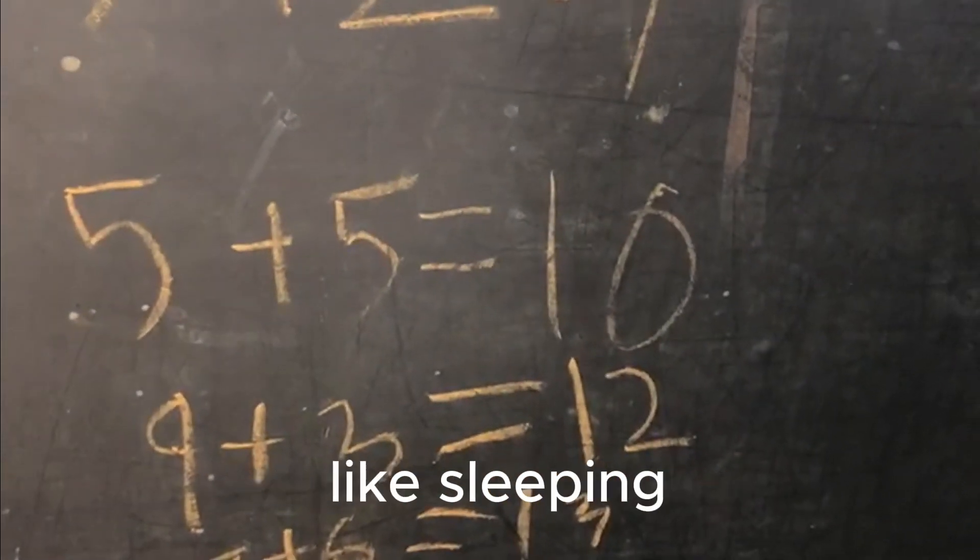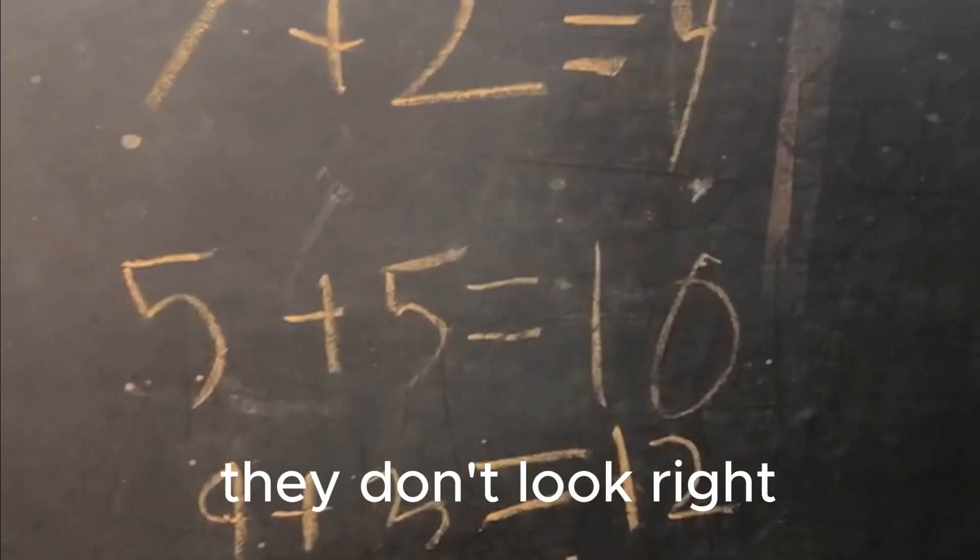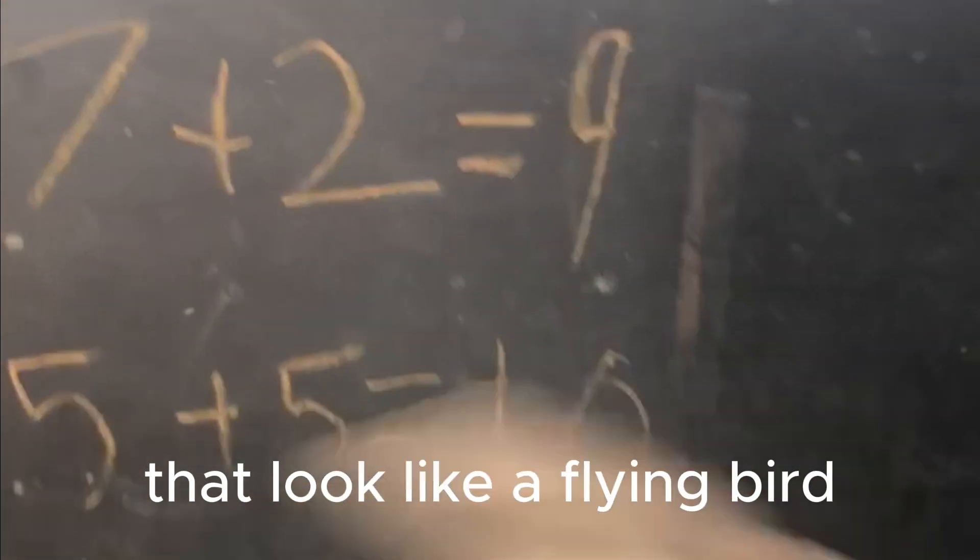Your threes are kind of like sleeping. They should not be lying on their side, they should be standing up. They don't look right—they look like a flying bird or something.